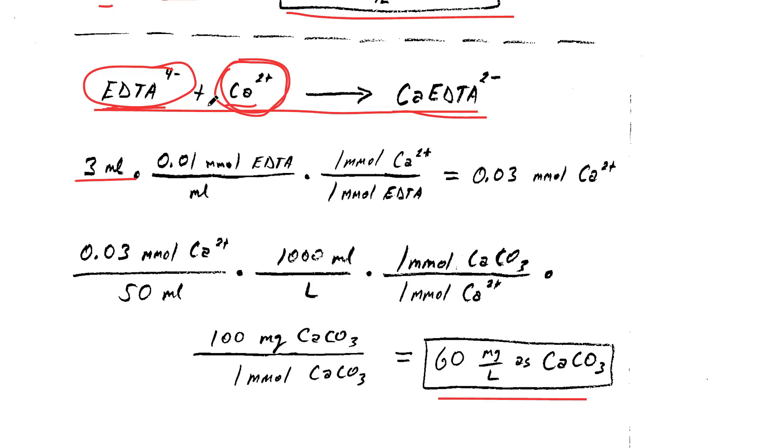And then from this reaction, we know that 1 mole of calcium had to react with the 1 mole of EDTA, and that's what's right here. And that gives us this 0.03 millimoles of calcium ions. This is the number of millimoles of ions that existed in the solution.